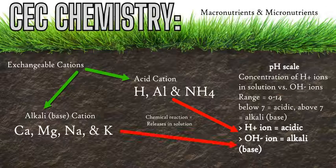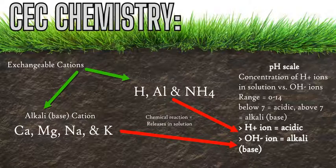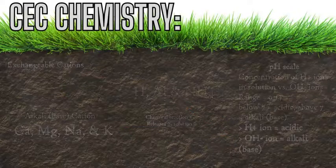The acid cations — hydrogen, aluminum, and ammonium — release more hydrogen ions when they chemically react in solution, which lowers the pH and makes it more acidic. The base cations — calcium, magnesium, potassium, and sodium — release hydroxyl ions into solution, causing the pH to rise and become more alkaline. The amount of each type of cation present can buffer and balance the soil acidity based on how much is available, how much is lost through weathering and erosion, how much the roots take up, and the overall CEC of the colloids.